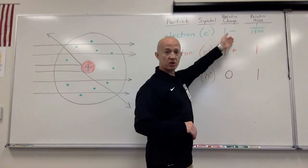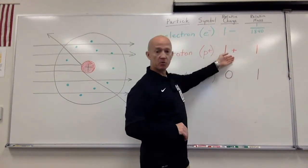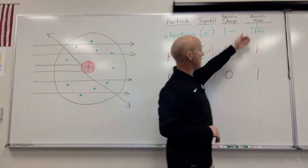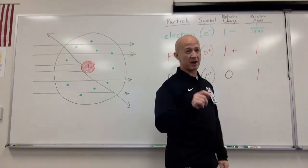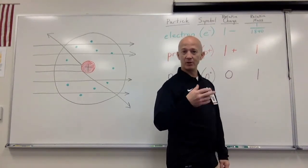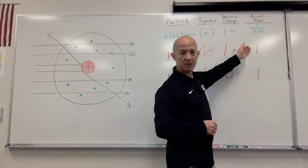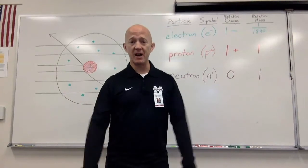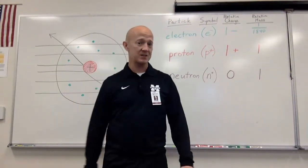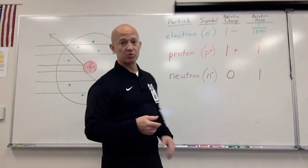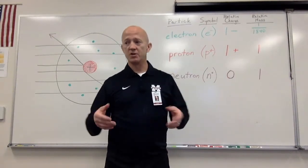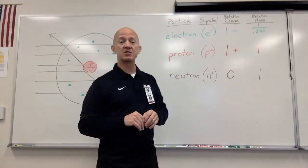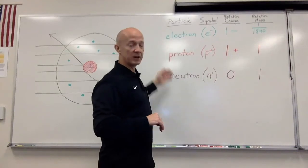The symbol for the electron is a lowercase e with a negative symbol. The proton is a lowercase p with a positive symbol. The neutron has a lowercase n with a zero to indicate no charge. The relative charge of an electron is one negative unit; the relative charge of a proton is one positive unit; and the neutron is neutral. The relative mass of an electron is about 1/1,840th that of a proton or neutron. The relative mass of a proton is one, and the relative mass of a neutron is one. We now know that protons and neutrons are composed of something called quarks, but we'll hold our discussion to these three subatomic particles.